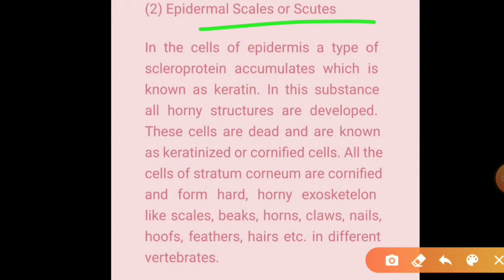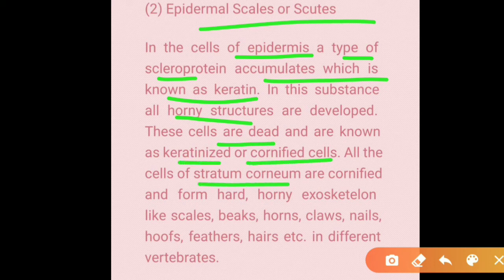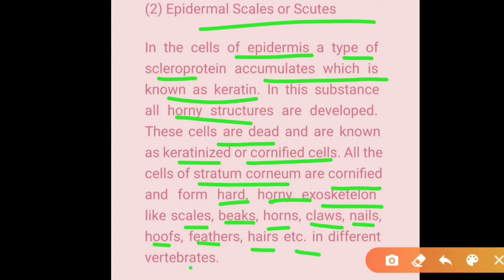Now for epidermal scales and scutes: in cells of the epidermis, a type of scleroprotein called keratin accumulates. These cells become dead and keratinized — also called cornified cells — forming the stratum corneum, which makes the hard horny exoskeleton. This includes structures like scales, beaks, horns, claws, nails, hooves, feathers, and hair in different vertebrates.